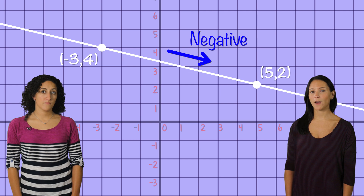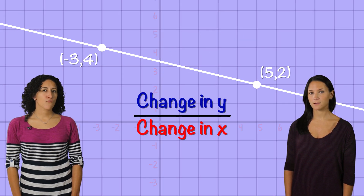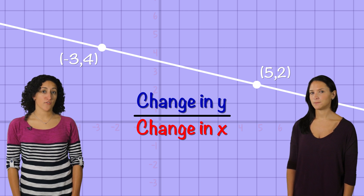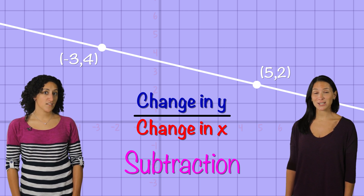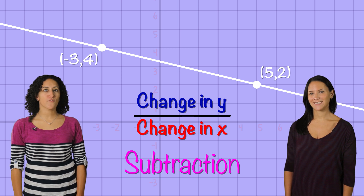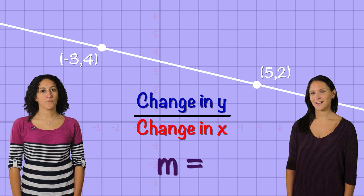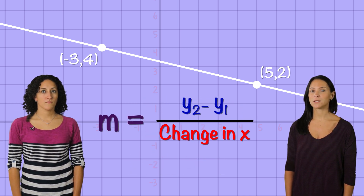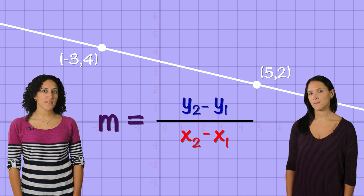So what is the formula that we should use to find it? Well, remember, when we found the slope by counting, we counted the change in y over the change in x. So that's the difference between y's over the difference between x's. And difference means... Subtraction! Exactly, so let's set up the formula using the unknown variable m as our slope: m equals y2 minus y1 over x2 minus x1.